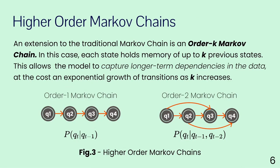An interesting extension of traditional Markov chains is the order-K Markov chain. This extension lets go of the concept of memorylessness, and instead states that each state holds memory of up to K previous states. This allows the model to capture longer-term dependencies in the data — so instead of just knowing the next note given the current state, we can predict the next state given K previous notes, providing better continuity in music generation, at the cost of an exponential growth of transitions as K increases.